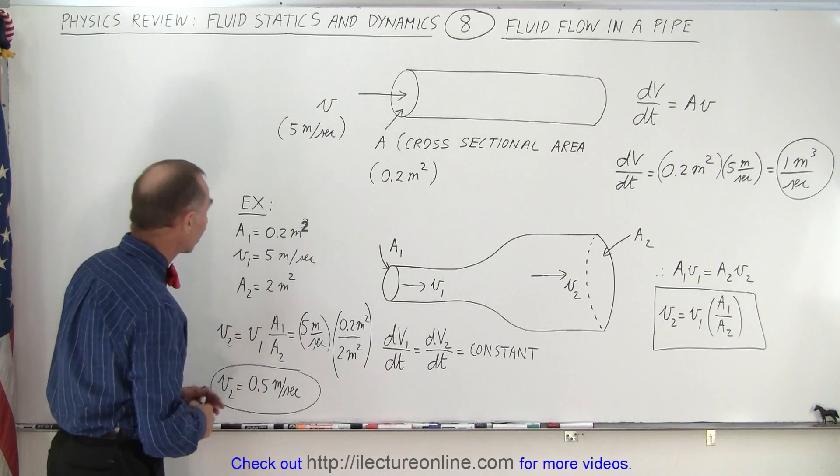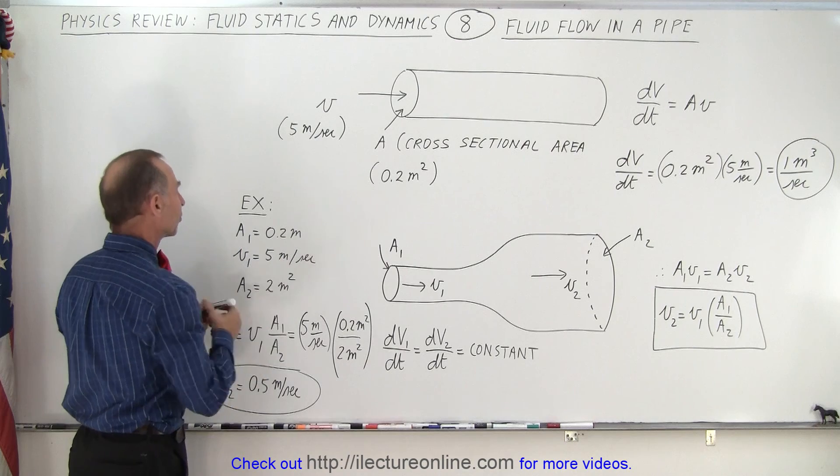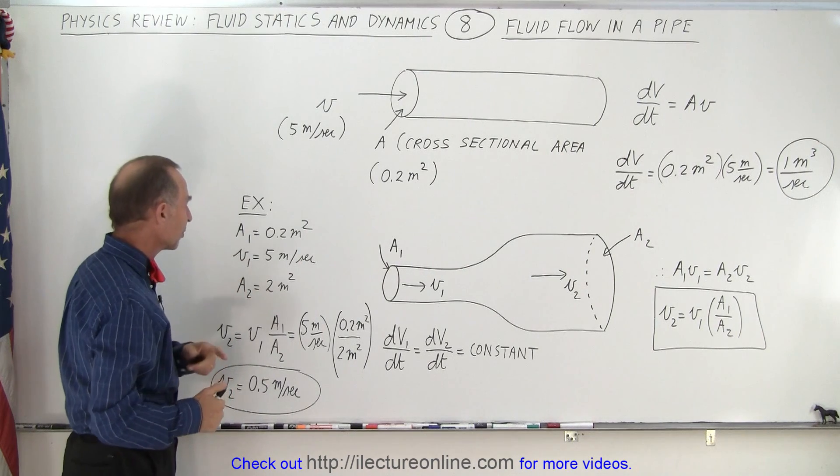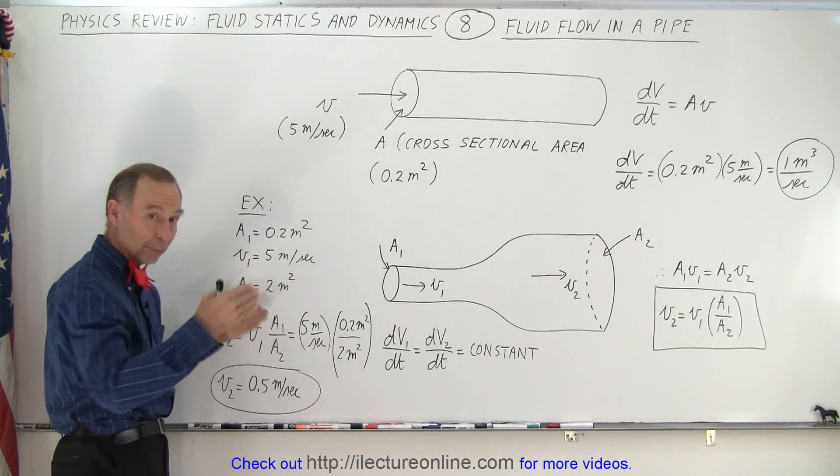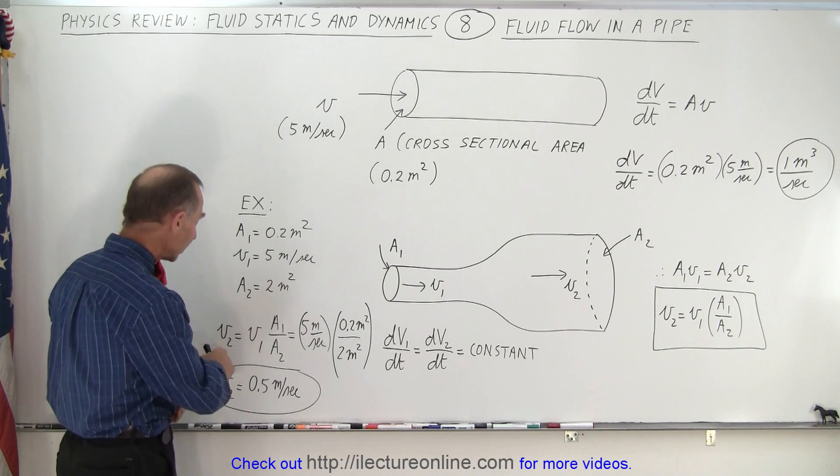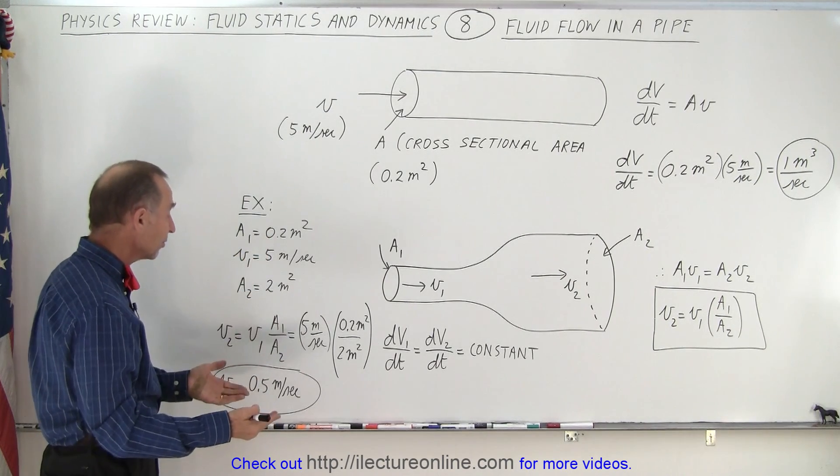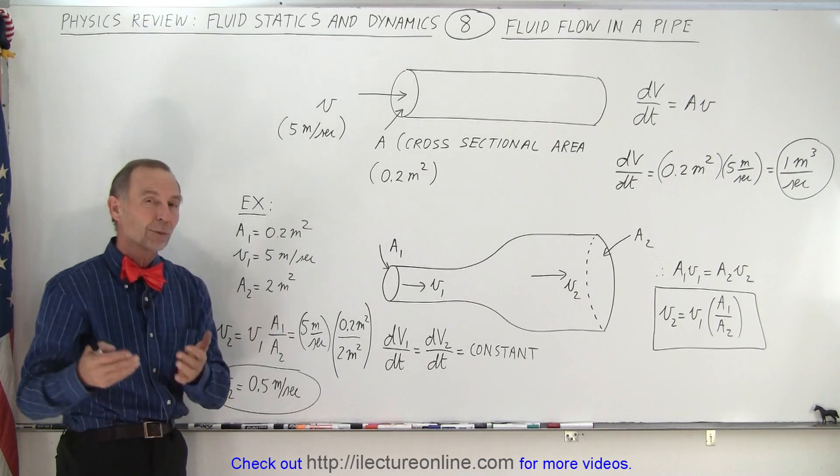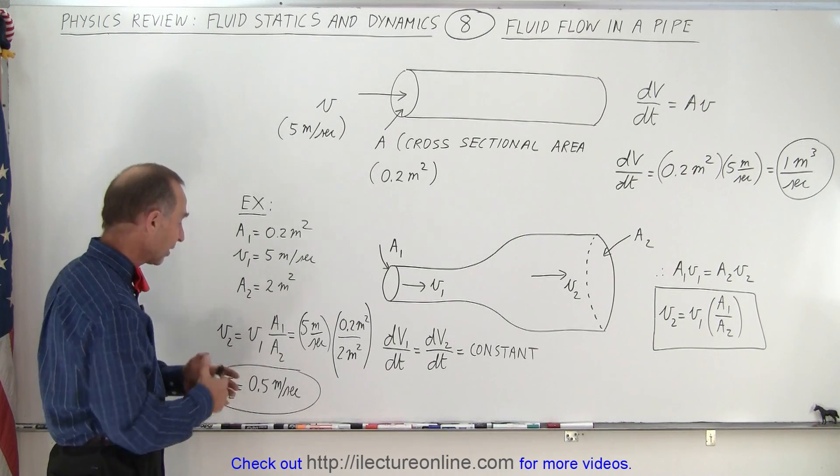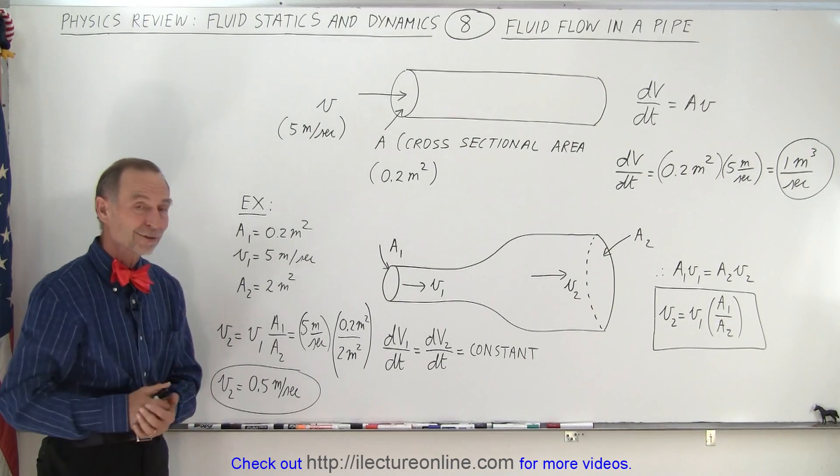When we plug in some numbers, let's say A₁ is 0.2 - oh that shouldn't be cube, that should be squared - 0.2 meter squared, velocity 5 meters per second. The second area is now 10 times as big, 2 square meters of area. And then you can calculate the velocity in the second section. So if the cross-sectional area increases by a factor of 10, that means the velocity must therefore reduce by a factor of 10 and it goes from 5 meters per second to 0.5 meters per second because the area is now 10 times as large, or the cross-sectional area I should say. And that is how it's done.